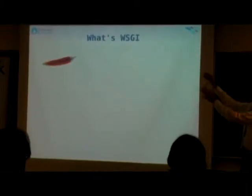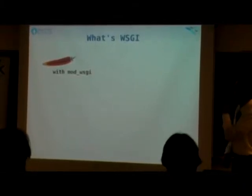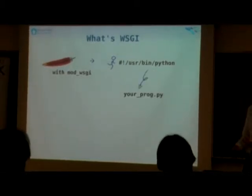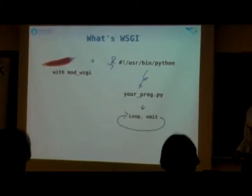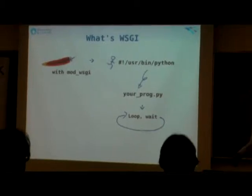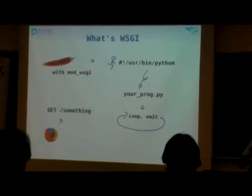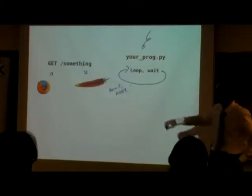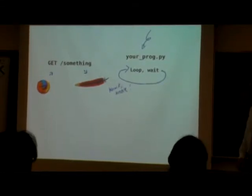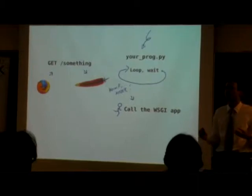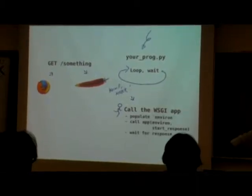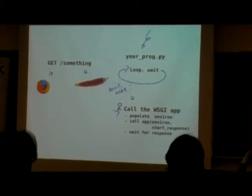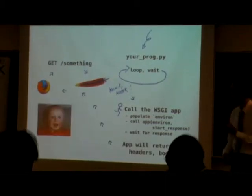So here's a bit of the flow. We have an Apache server, or IIS, or other stuff with a module that supports WSGI, which is going to run at startup a Python interpreter and run your program which hosts your application. It loops and waits, unlike CGI, which spawns a new process every request. A user request gets dropped through Apache, mod_wsgi knocks and calls the WSGI application as Python code. The app creates an environment variable — a dictionary similar to a CGI dictionary — then waits for the response and sends it back to the user.